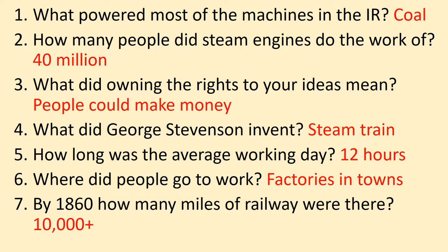Most people worked in factories in towns. This is a massive change from what we've been looking at previously, because most people would have been farmers. But in the Industrial Revolution, factories were the main place people worked. And roughly by 1860, there were over 10,000 miles of railway — so a good amount.